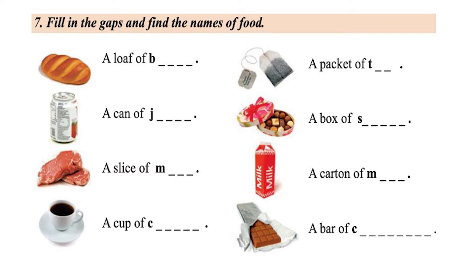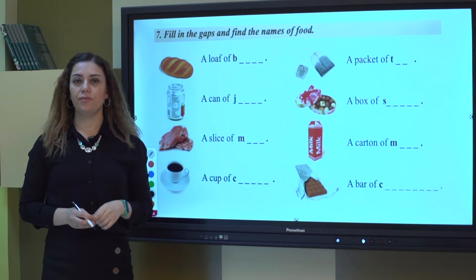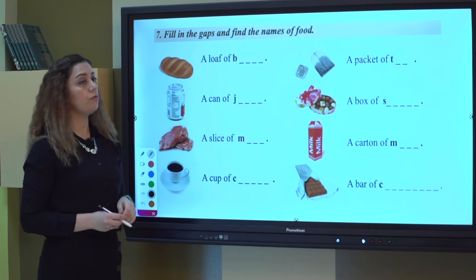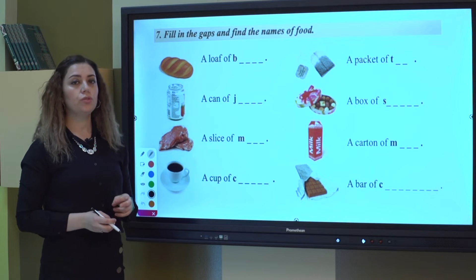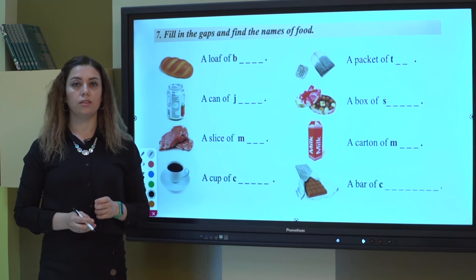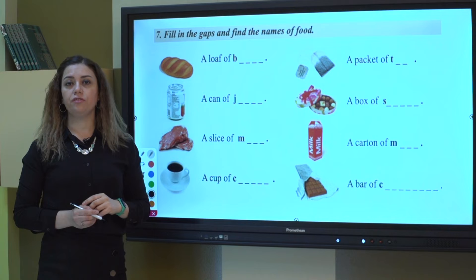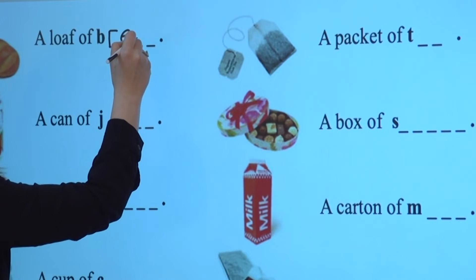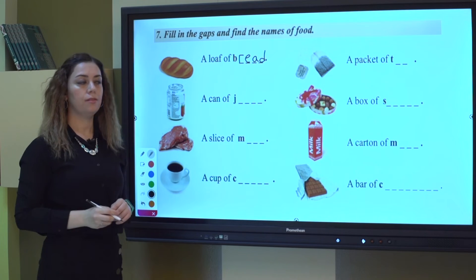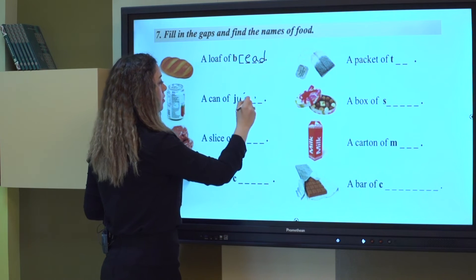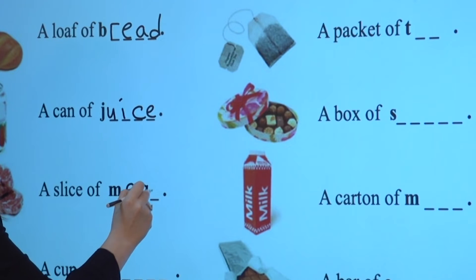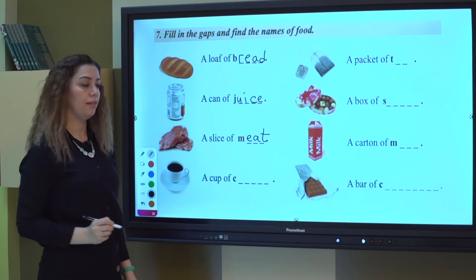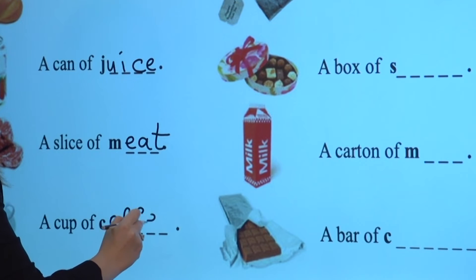Now let's learn some expressions about food. In English, we usually use these quantifiers with some nouns. Let's fill in this exercise with the necessary words. When we want to buy bread, we cannot count breads — we don't say "two breads" but we say "two loaves of bread" because the word bread is uncountable. So we write: a loaf of bread, a can of juice, a slice of meat, a cup of coffee.